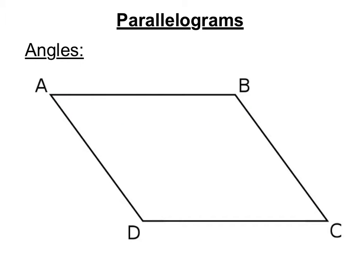The second thing you need to know about the angles of a parallelogram is that consecutive angles are supplementary. Consecutive means one right after the other. So angle A and angle B are consecutive. B and C are consecutive. C and D are consecutive. And D and A are consecutive. So therefore, angle A and angle B are supplementary.